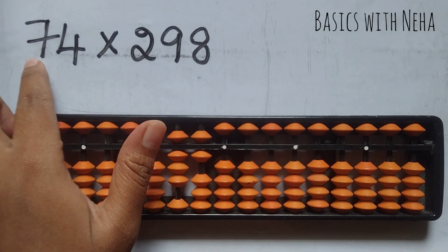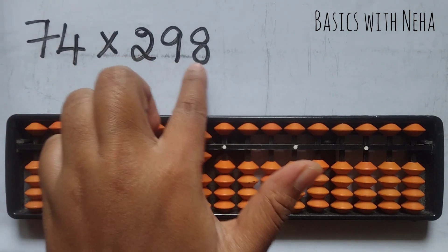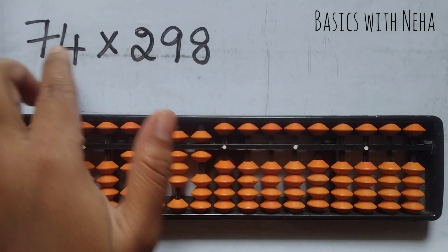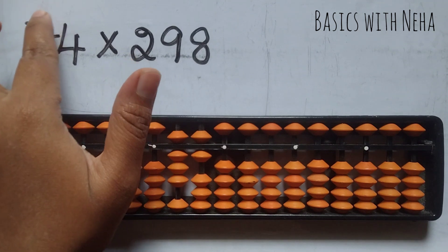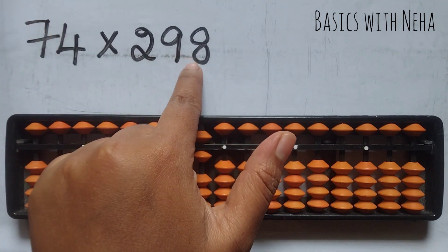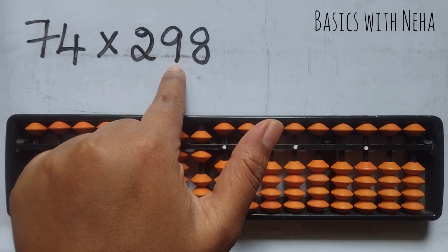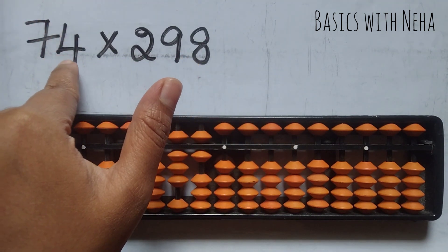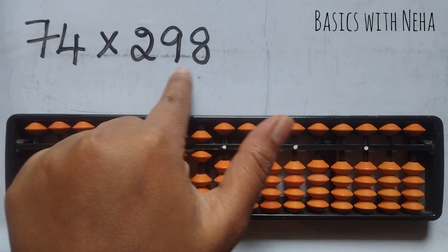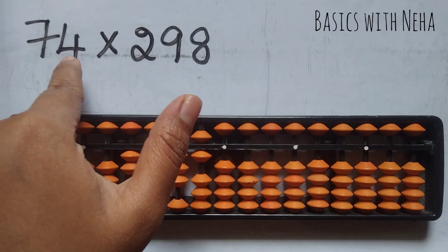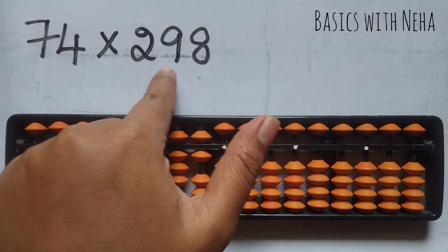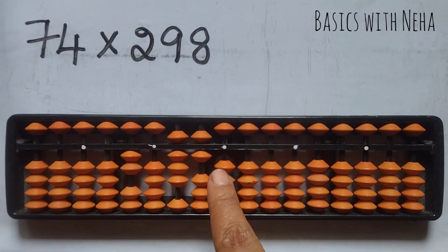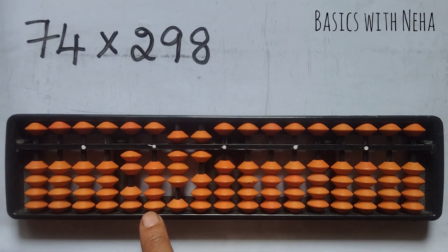Now you're done with 7 into 2, 9, 8. So 7 is done. That means we're left with only 1, 2, 3, 4 numbers. You have to do 4 into 298. Since it is 4 numbers, you have to start from the 4th rod from the house pointer 1s rod.